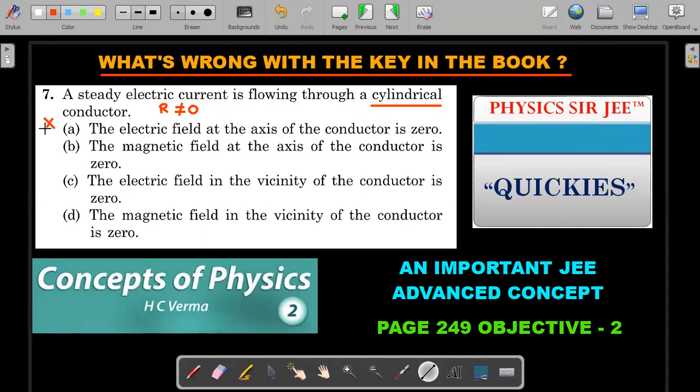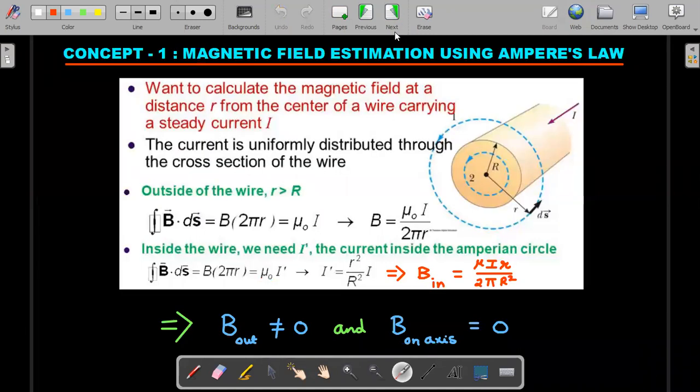So in that scenario, electric field at the axis is zero is wrong statement, and magnetic field at the axis of the conductor is zero is the correct one. Electric field in the vicinity of the conductor is zero—that is actually not correct but was given in the original key—and the magnetic field in the vicinity of the conductor is zero is also not right. So the given key was B, C, it has to be changed to only B. That is the whole understanding here. If A is also taken into account then C will also come. You can argue that it should be either A, B, C, but B, C is definitely a wrong combination of the key.